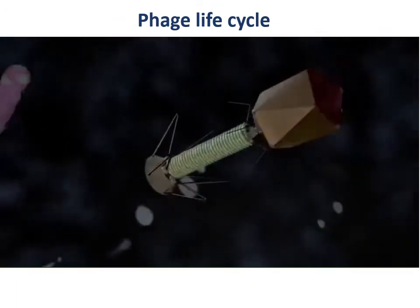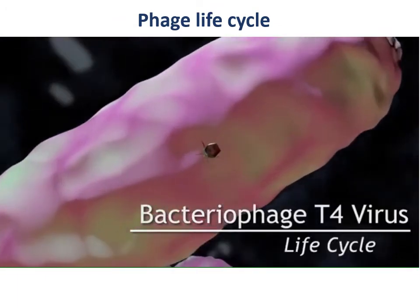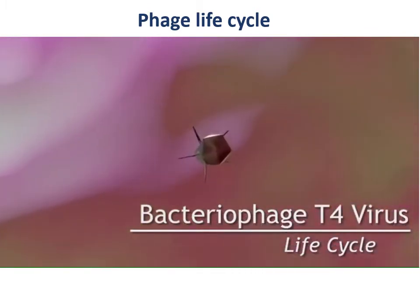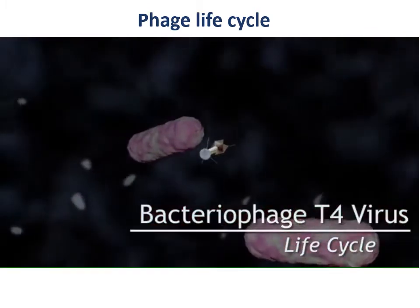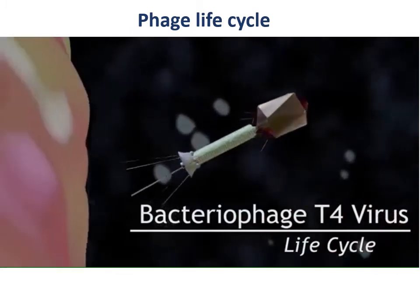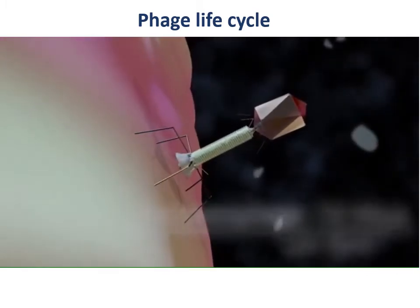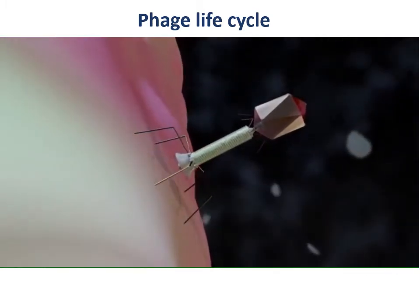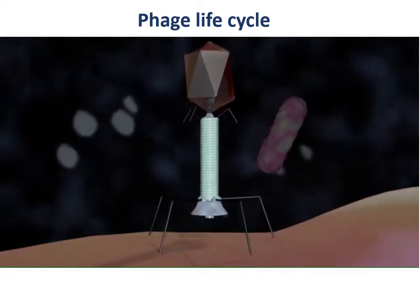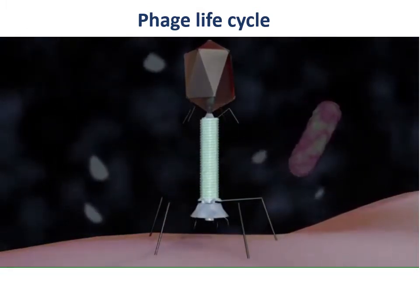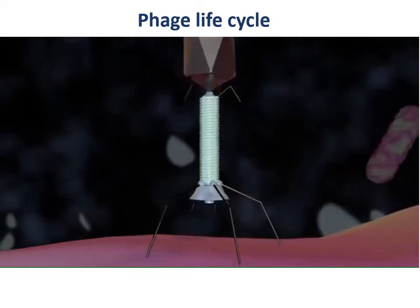The T4 phage initiates infection of an E. coli bacterium by recognizing cell surface receptors of the host with its long tail fibers. A recognition signal is sent through the long tail fibers to the base plate, which unravels the short tail fibers that bind irreversibly to the E. coli cell surface.